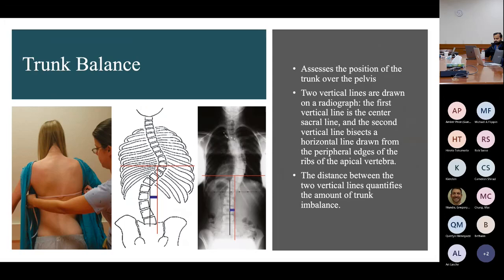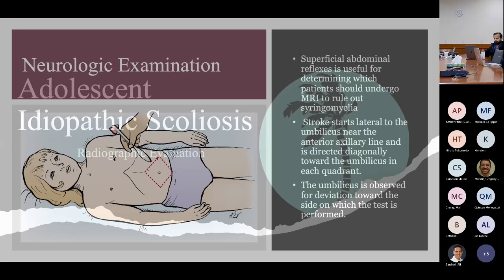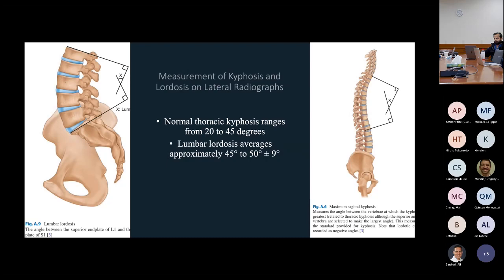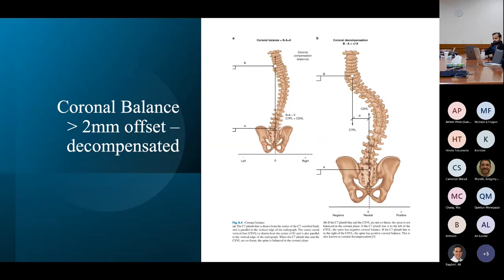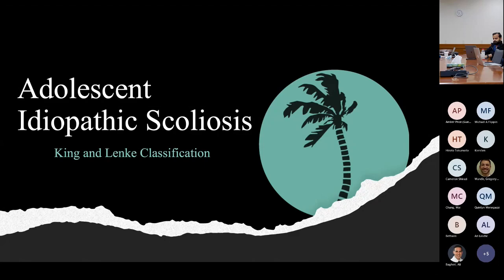On neurological examination, the superficial abdominal reflexes are important and can be used to determine which patients should undergo an MRI. You start at the outer edge of the abdomen, stroke in toward the umbilicus, and look for deviation — these reflexes should be symmetric. For radiographic evaluation, standard measurements include Cobb angle, lumbar lordosis, and thoracic kyphosis. Coronal balance is similar to the plumb line but is a radiographic evaluation, and bending films are also obtained.